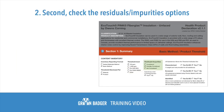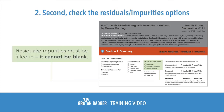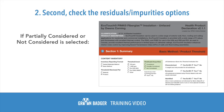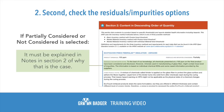Second, you need to check the residuals and impurities options. It must be filled in — it cannot be blank. If "partially" or "not considered" is selected, it must be explained in the notes section in section 2 of why that is the case.